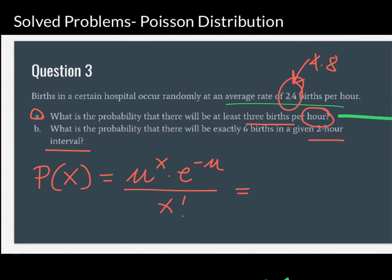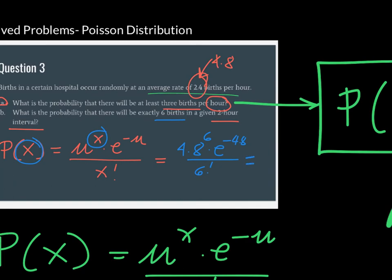With the new mean of 4.8, we compute P(X = 6): 4.8 raised to 6, times e to the negative 4.8, divided by 6 factorial. Use the e key in your calculator — press alpha or shift depending on your calculator version — raised to negative 4.8, divided by 6 factorial. The result is approximately 0.1398, or 13.98%.